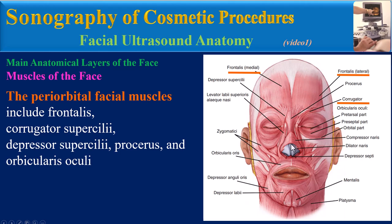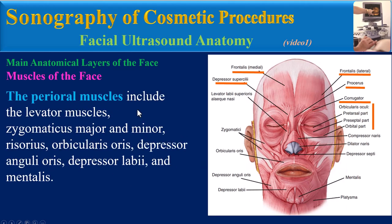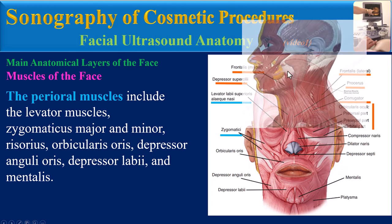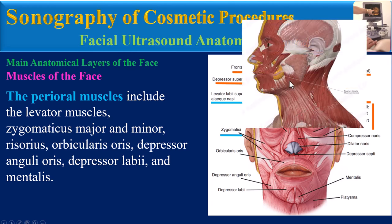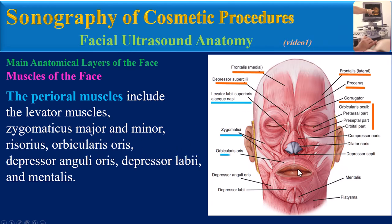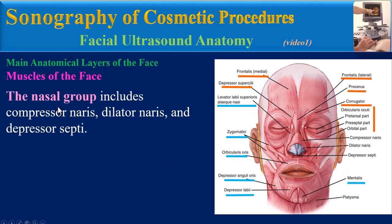The periorbital facial muscles include the frontalis muscle, corrugator supercilii, depressor supercilii, procerus muscle, and orbicularis oculi. Another group is the perioral muscles, which include the levator muscles, zygomaticus major and minor, risorius muscle (visible on sagittal view), orbicularis oris, depressor anguli oris, depressor labii, and mentalis. The third group is the nasal group muscles, which include compressor naris, dilator naris, and depressor septi.